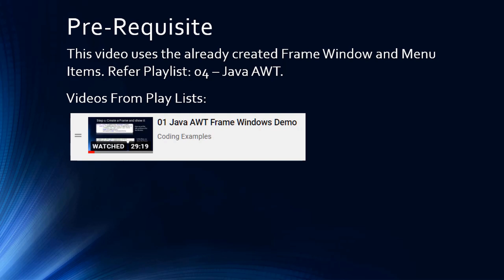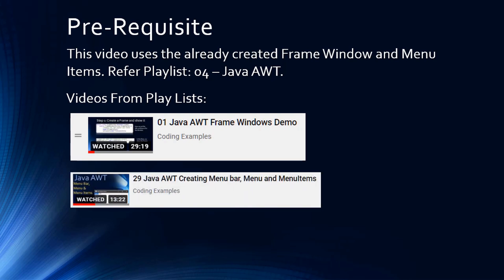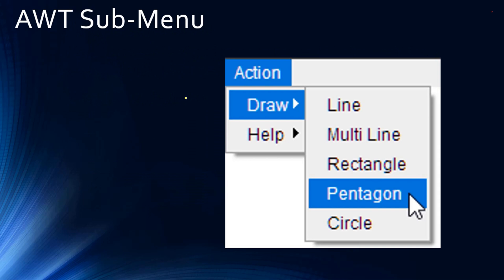The prerequisite for this video is the sub code which was created in a frame window. The second prerequisite is video number 29 - how to create menu bar, menu, and menu items. In this video we are going to change the existing menu which was created in video 29 and make that menu a sub menu.